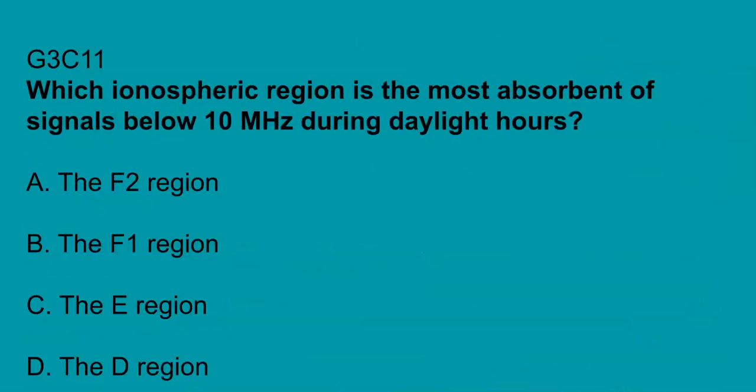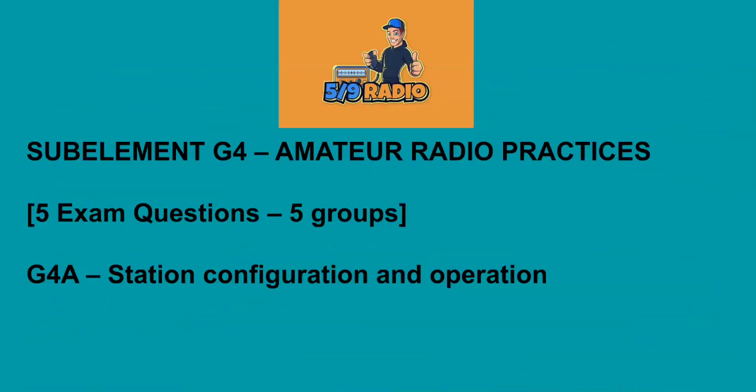G3C11: which ionospheric region is most absorbent of signals below 10 MHz during the daylight hours? The D region. Next up we'll cover G4, and we're going to save that for another video. Thank you for joining us. If you're not subscribed, please go ahead and subscribe to the 5.9 Radio channel so you're receiving all of our updated videos as we release more.